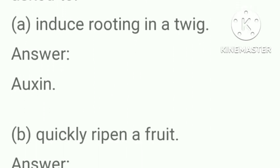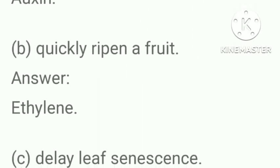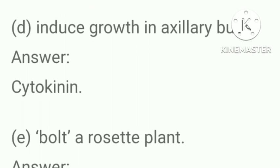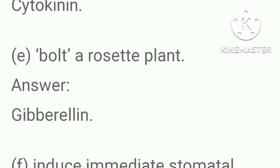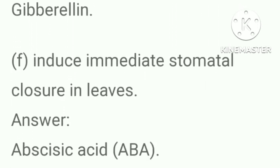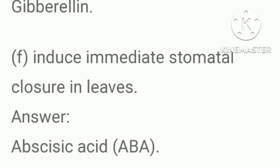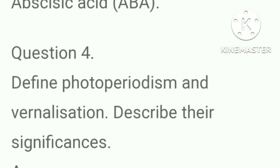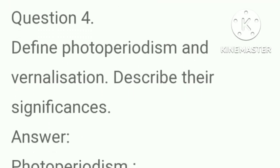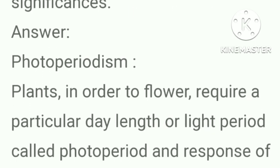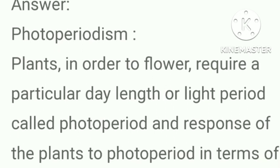Which plant growth regulators would you use for: inducing rooting in a twig — auxin; quickly ripening a fruit — ethylene; delaying leaf senescence — cytokinin; inducing growth in axillary buds — cytokinin; bolting in a rosette plant — gibberellin; inducing immediate stomatal closure in leaves — abscisic acid.